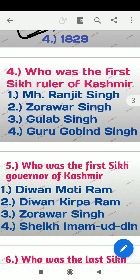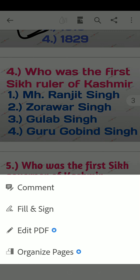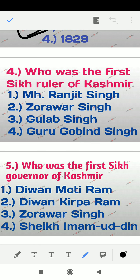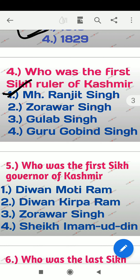Question 4: Who was the first Sikh ruler of Kashmir? Options are Maharaja Ranjit Singh, Zarwar Singh, Gulab Singh, Guru Gobind Singh. The right answer is option number 1 — Maharaja Ranjit Singh. He was the first Sikh ruler of Kashmir.